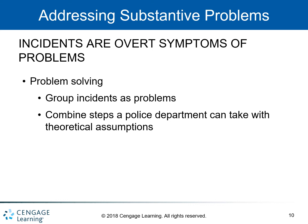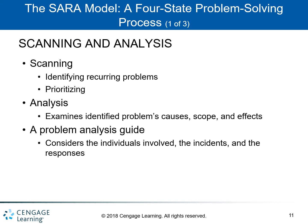The SARA model is a four-stage problem-solving process. The first steps are scanning and analysis, which are integrally related. The sources for analyzing a community's problems provide the basis for analysis. Scanning refers to identifying recurrent problems, and analysis examines the identified problem's scope, cause, and effects.